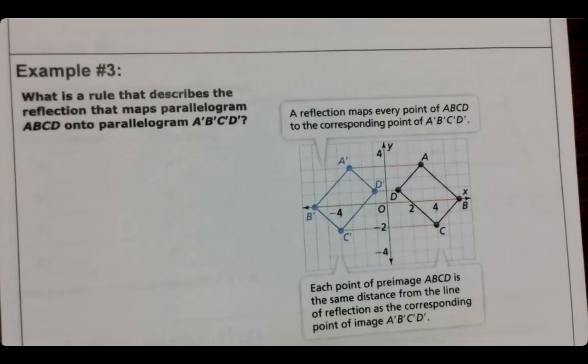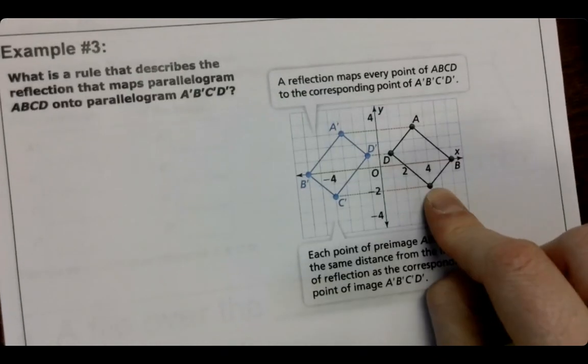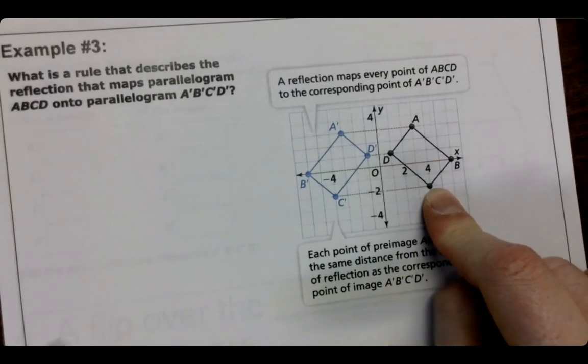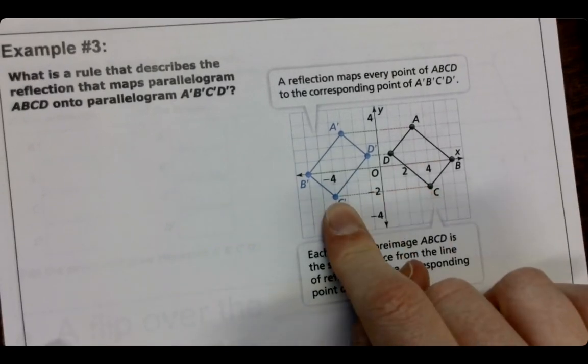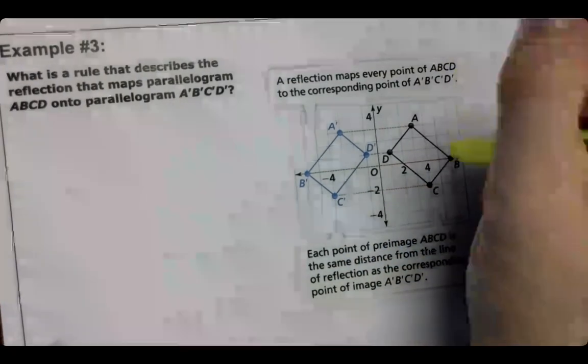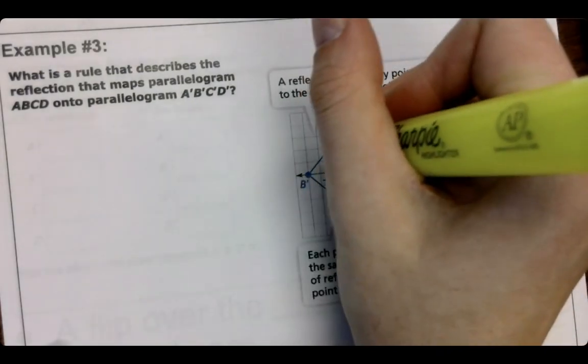All right, so keeping that in mind now, if you notice, it says the reflection maps every point A, B, C, D, so that's the black one, to the corresponding point A prime, B prime, C prime, that's the blue one. So it's starting here, this is a one, and this is our two.